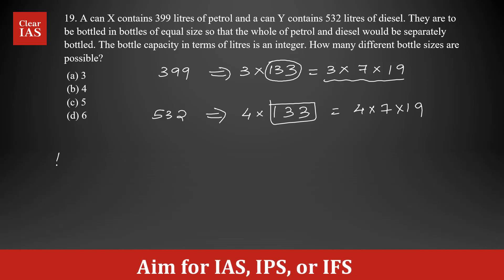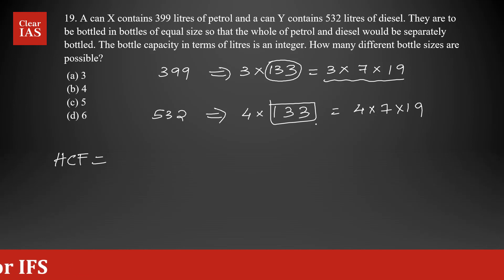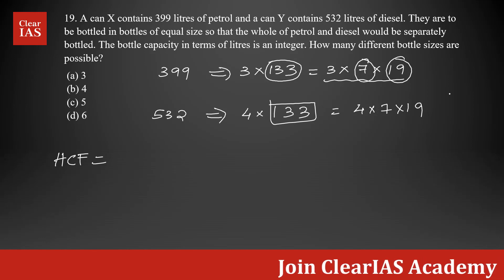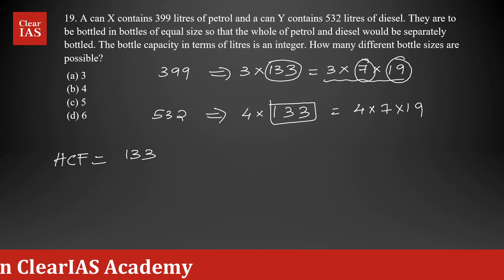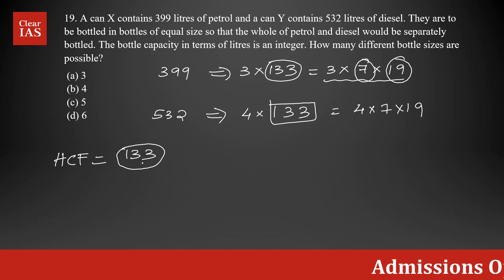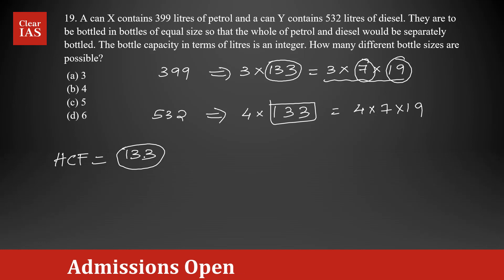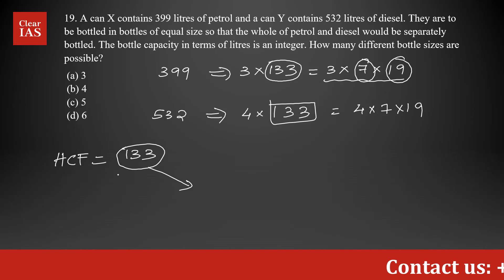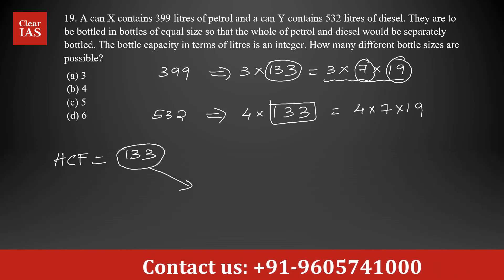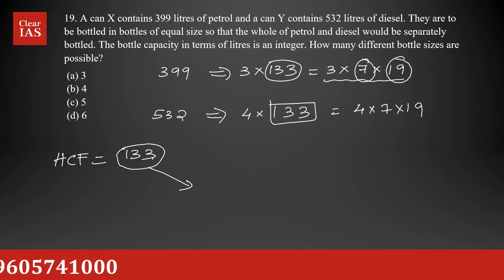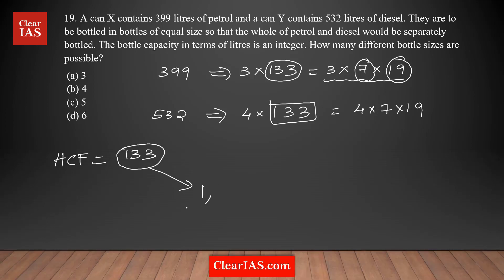The highest common factor of 399 and 532 is 133, since both share factors 7 and 19. So 133 is the HCF — this represents the highest possible bottle capacity. Any factor of 133 will satisfy the requirement. The factors of 133 are: 1, 7, 19, and 133. So there are four factors.